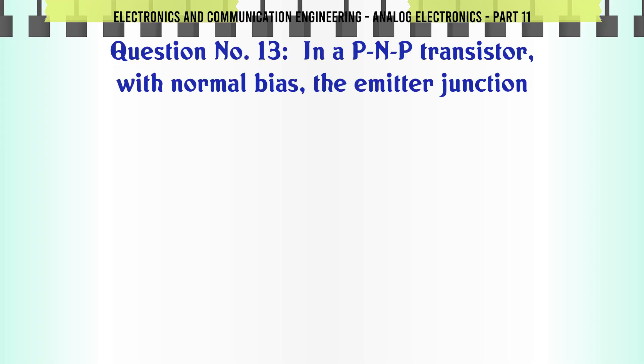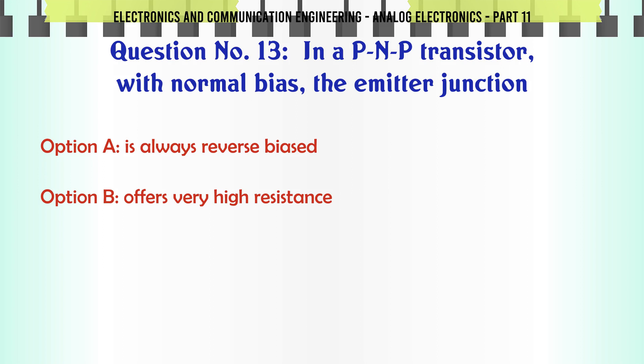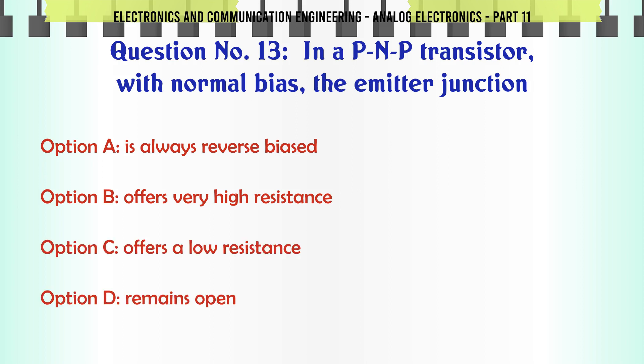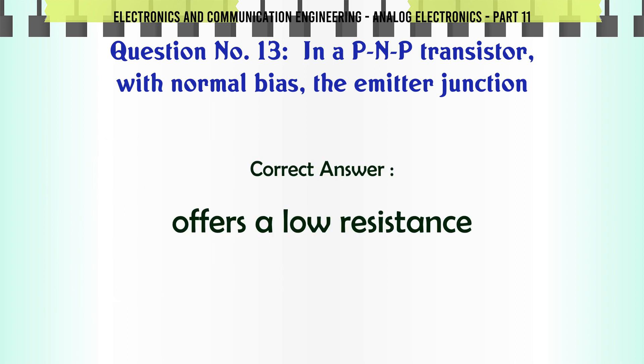In a PNP transistor with normal bias, the emitter junction. A. Is always reverse biased. B. Offers very high resistance. C. Offers a low resistance. D. Remains open. The correct answer is: Offers a low resistance.